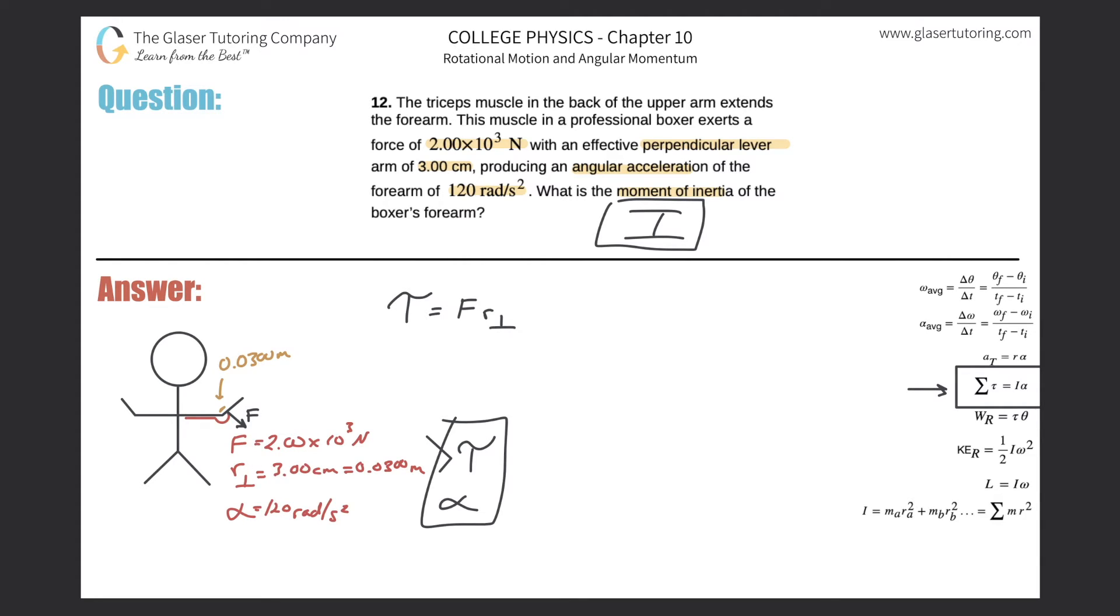Sum of the torques is simply going to equal the moment of inertia multiplied by the angular acceleration. Solve this for moment of inertia. Obviously that becomes the sum of the torques over my angular acceleration. There's only one torque in the problem, so therefore this sum is just equal to this thing, the force multiplied by the perpendicular lever arm.